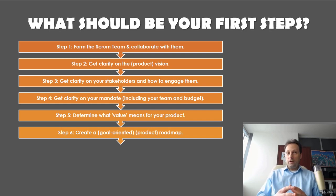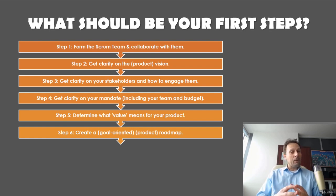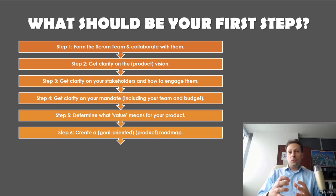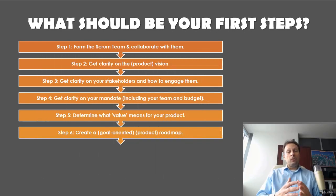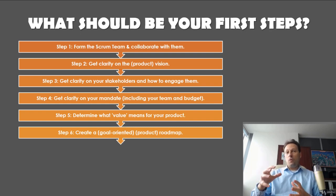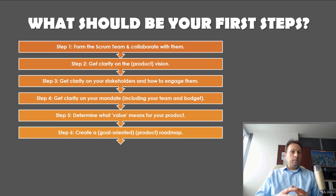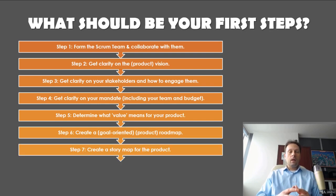Step six: create a goal-oriented product roadmap. Now that you've defined what value is for your product and how to measure it, translate this into a goal-oriented product roadmap. This type of roadmap is appreciated because it focuses on value and goals first, and features later. Many product owners fall into the trap of maximizing the team's output — but your goal should be to maximize the outcome. Start by defining a couple of goals for the shorter term and the longer term. This will make ordering and managing your product backlog much easier.